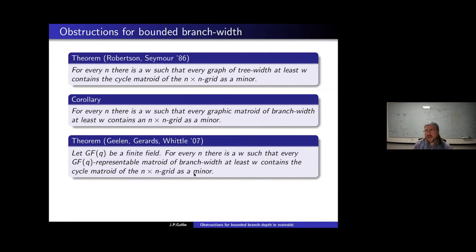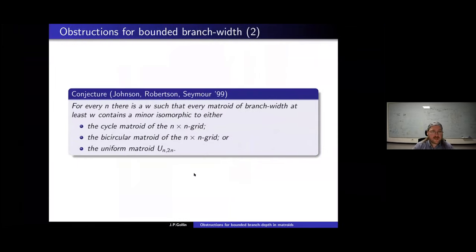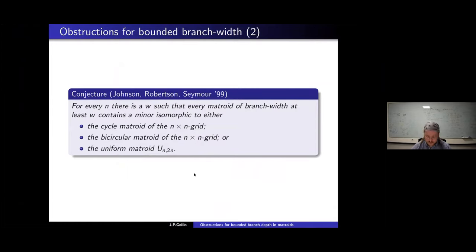Grids seem to be the right obstructions, but this has not yet been shown for all matroids. The conjecture from Johnson, Robertson, and Seymour states: for every n there is a w such that every matroid of branch width w contains a minor isomorphic to either the cycle matroid of the grid, the bicircular matroid of the grid, its dual, or a large uniform matroid U_{n,2n}.